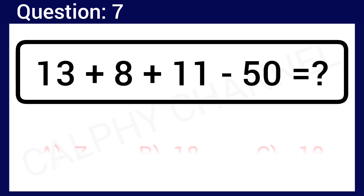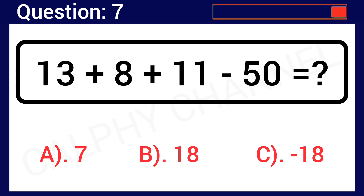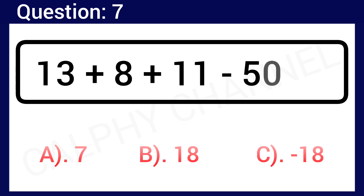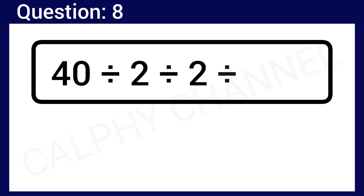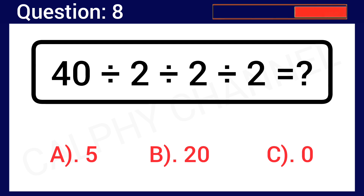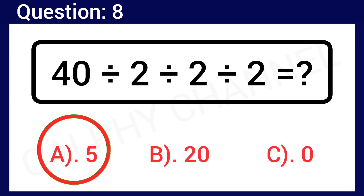Question number 7 options: Option A: 7, Option B: 18, Option C: negative 18. The correct answer is Option C, which is negative 18. Question number 8: 40 divided by 2 divided by 2 divided by 2 is equal to what? Option A: 5, Option B: 20, Option C: 0. The correct answer is Option A, which is 5.